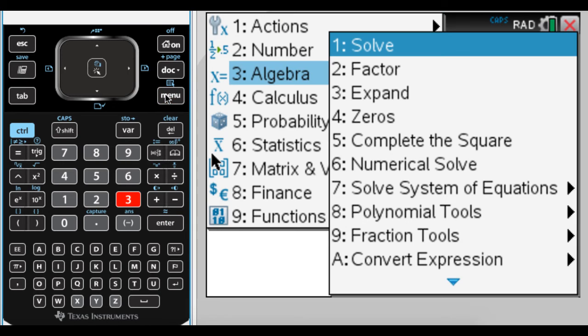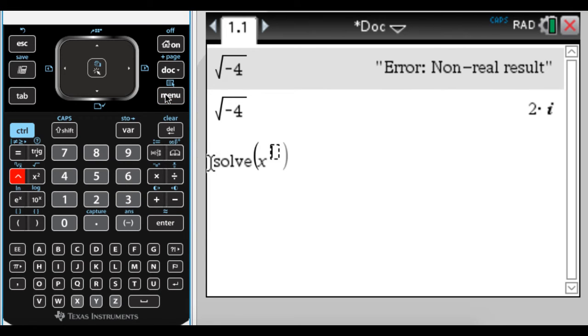So I'm going to do menu 3, 1, and x squared plus 4 equals 0, 4x. So right now I'm in that complex. I set complex to rectangular, so you'd think this would give you answers, but it doesn't. But it turns out you can get complex solutions. It's just that you don't use the normal solve function.